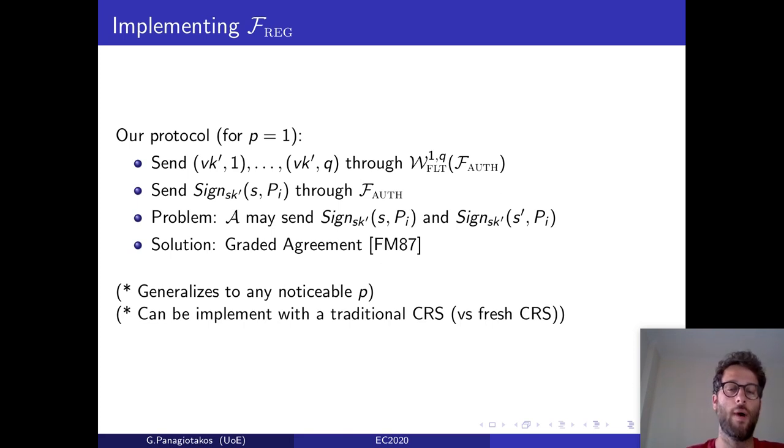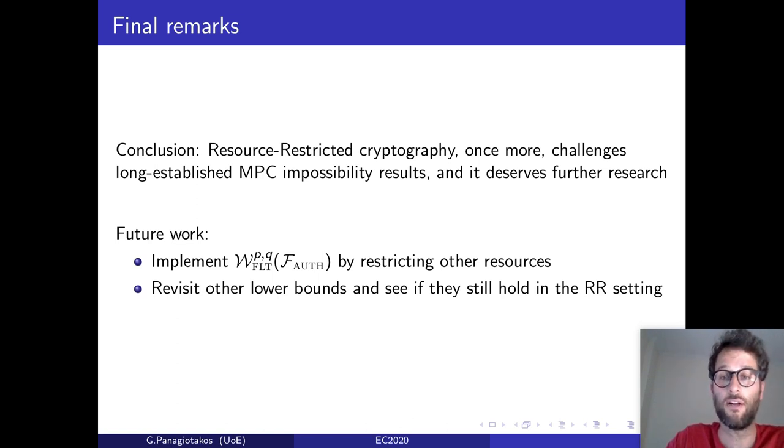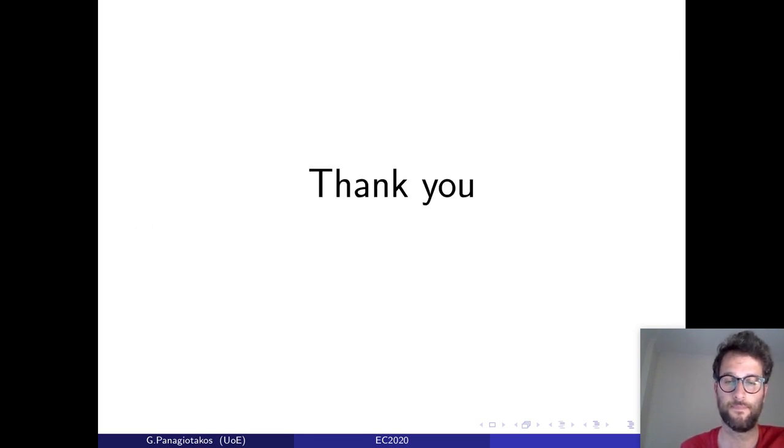And finally, while the filtering functionality we implemented earlier assumes a fresh CRS, we can implement a weaker form of this functionality based on a traditional CRS where the adversary can learn the CRS string a lot earlier than the honest parties. Concluding, we saw that resource-restricted cryptography once more challenges long-established MPC impossibility results, and that's why it deserves further research. We have identified a couple of interesting directions. First, implementing the filter network functionality by restricting other resources that parties may have such as space, as well as unifying older works under this filter network abstraction. Secondly, revisiting other MPC lower bounds and seeing whether they still hold in the resource-restricted setting. Thank you all and keep safe.